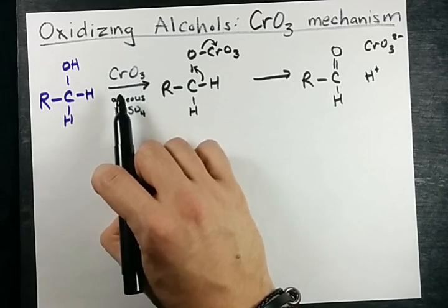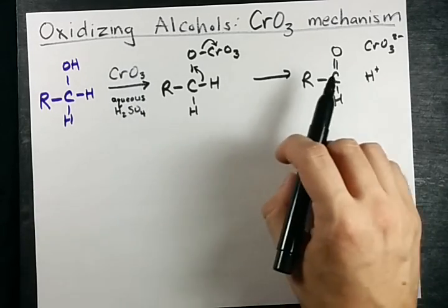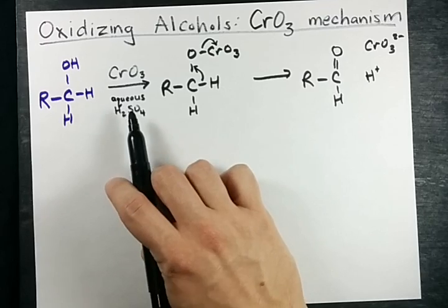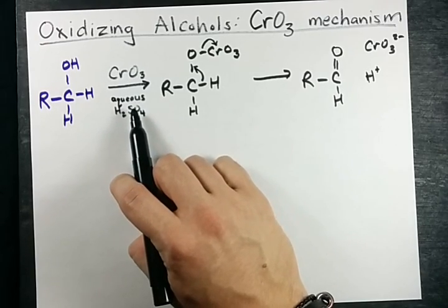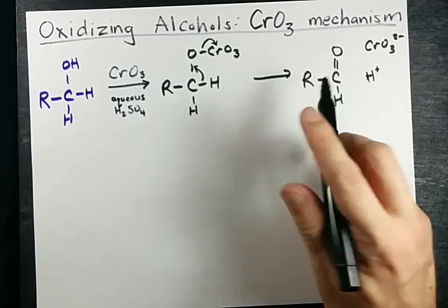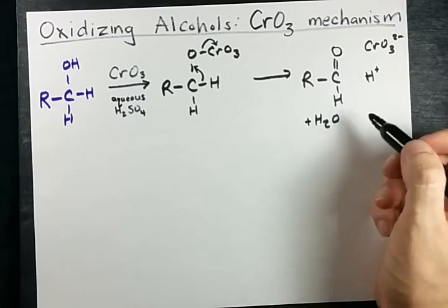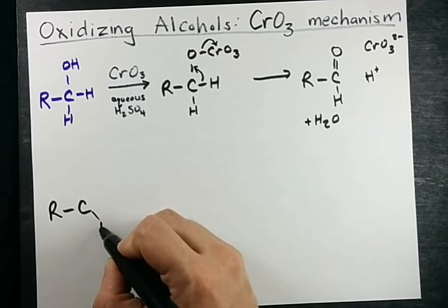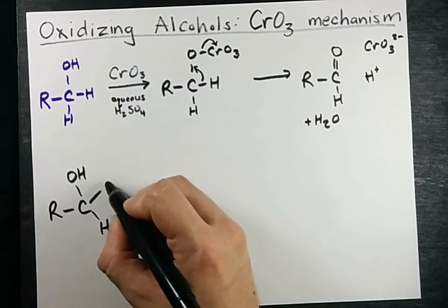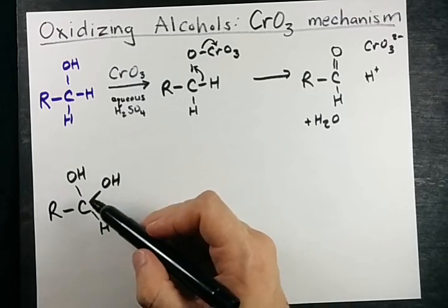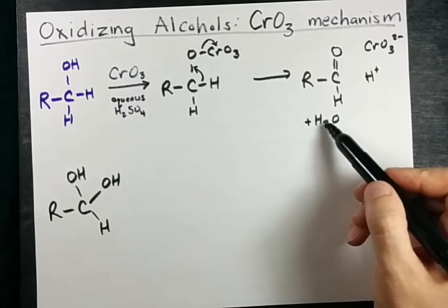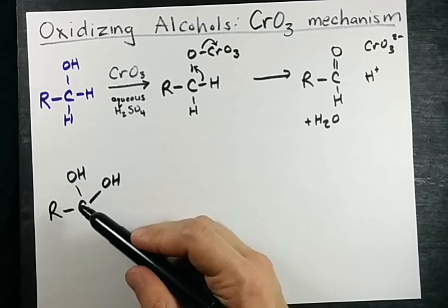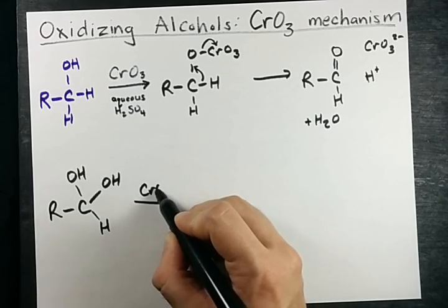If you're using CrO₃ in aqueous H₂SO₄, then this aldehyde is going to get oxidized as well. Because we often do this reaction in aqueous H₂SO₄, this particular molecule reacts with water to form RCHOHOH. This is what exists when you have an aldehyde in water — it's an equilibrium between the two, but this form is much more susceptible to oxidation by CrO₃ via the exact same mechanism.